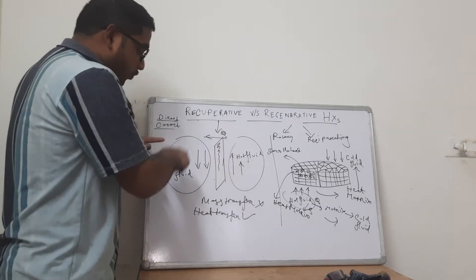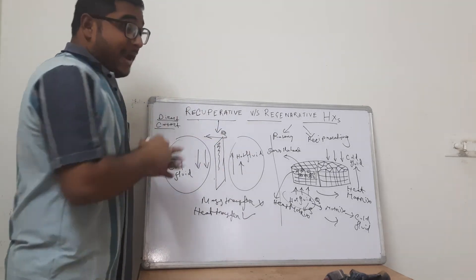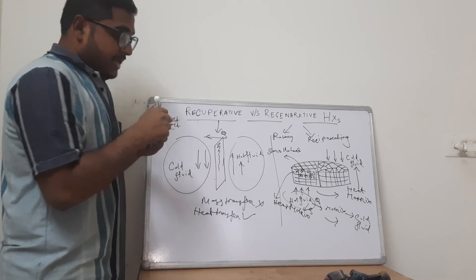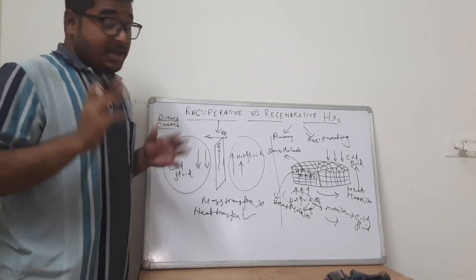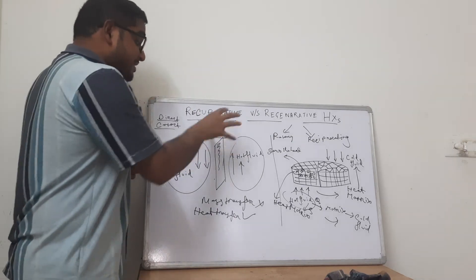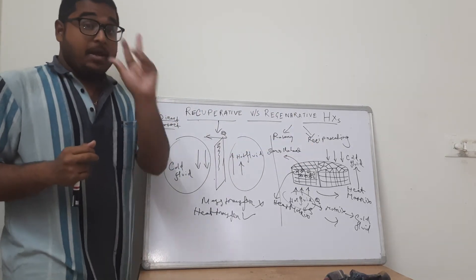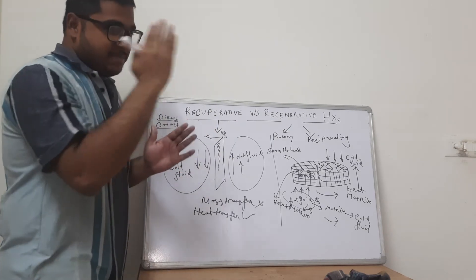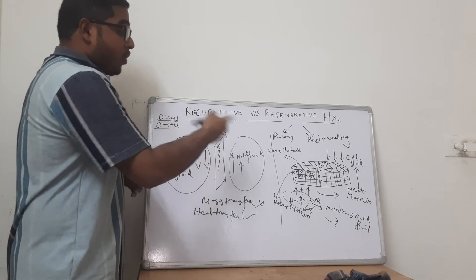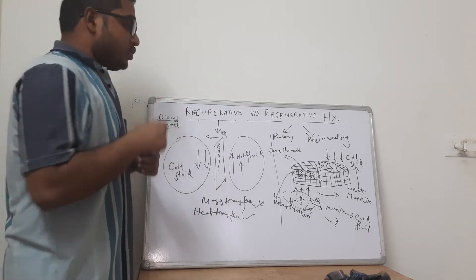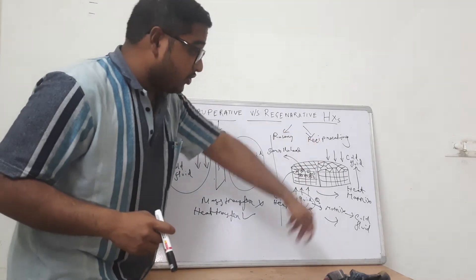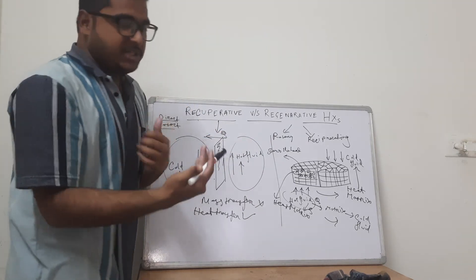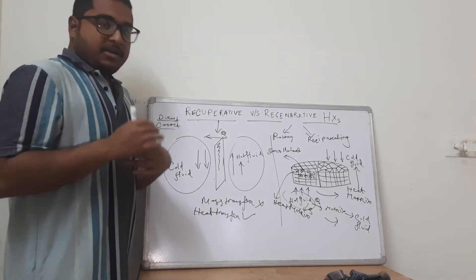In the recuperative type, the hot fluid and cold fluid move parallel or anti-parallel to each other, separated by a heat transfer surface with high conductivity that directly transfers heat from the hot fluid to the cold fluid — though it is an indirect contact method. Both recuperative and regenerative are indirect contact, but in recuperative, the hot and cold fluids are not moving through the same media; they are separated by a simple heat transfer surface where heat transfer occurs continuously. Whereas in the regenerative type, the heat absorbed from the hot fluid is transferred to the cold fluid after a certain delay, so there is always a lag in a regenerative heat exchanger.